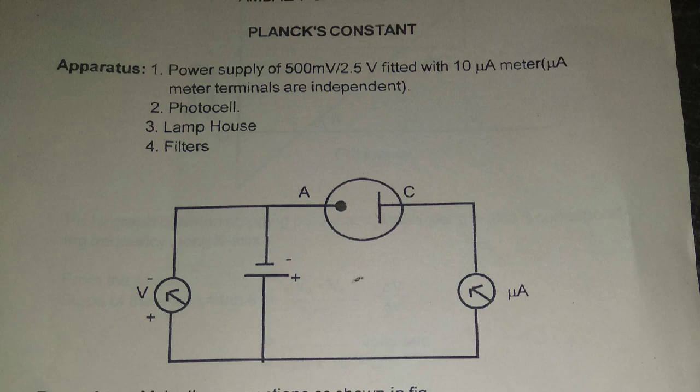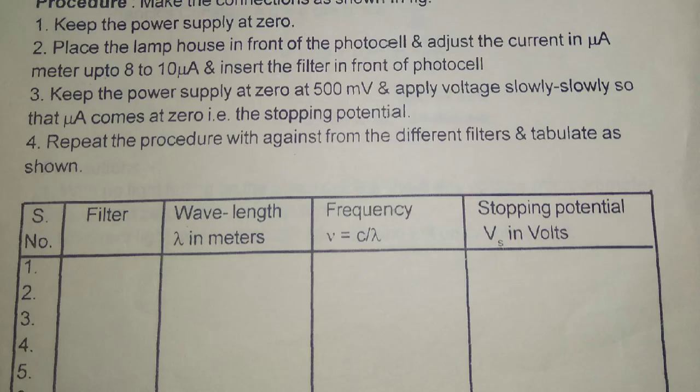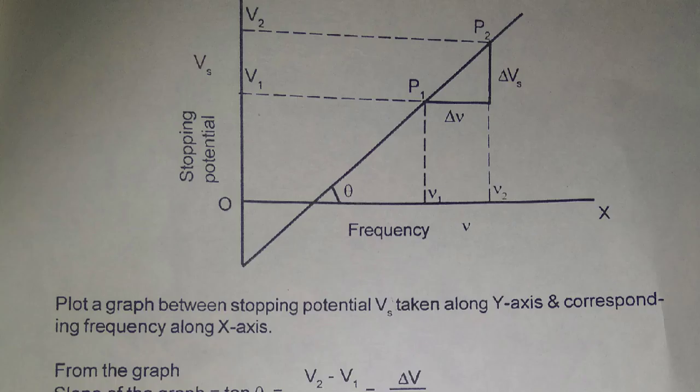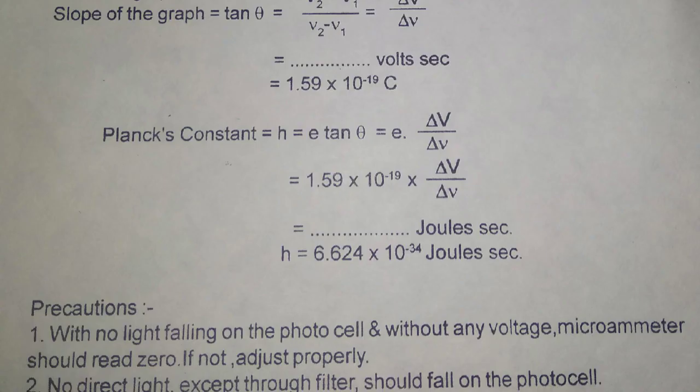As we increase the frequency, the stopping potential also increases. We plot a graph between frequency and stopping potential and find the slope. From Einstein's equation, we know that slope equals h/e. Comparing these slopes, we find the value of Planck's constant.